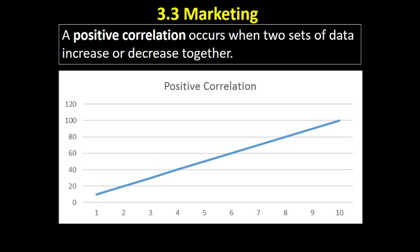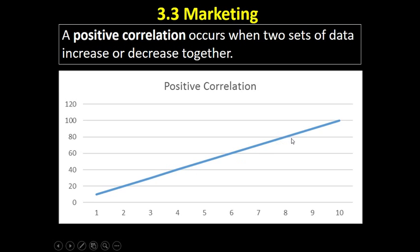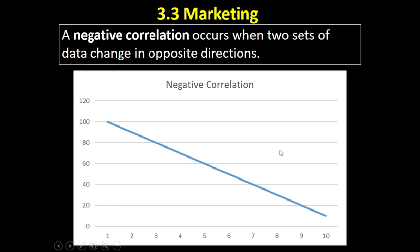A positive correlation occurs where two sets of data increase or decrease together. You can see that as one set of data increases, so does the other. For example, on the vertical axis we might have advertising spending and on the horizontal axis we have sales. We would hope that the more money we spend on advertising, the more sales we make. That's a positive correlation — the data is moving in the same direction.